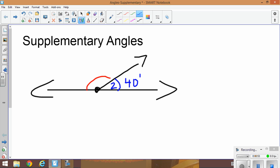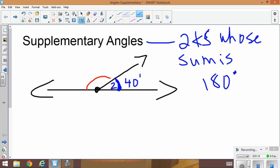Okay, supplementary angle means two angles whose sum is 180 degrees. So I know if the whole thing is 180 and angle two measures 40, to find angle one I take 180 degrees subtract 40 and I get 140 degrees.